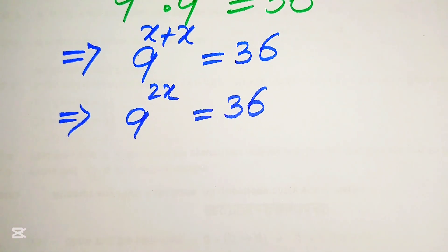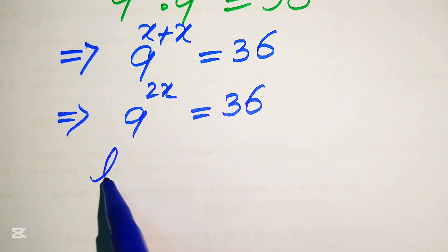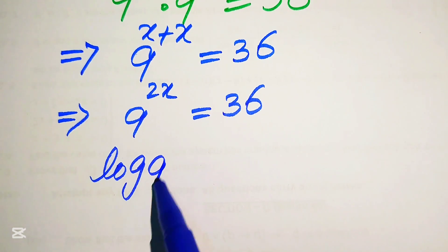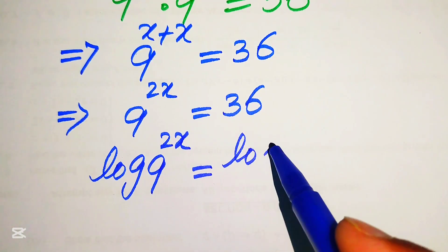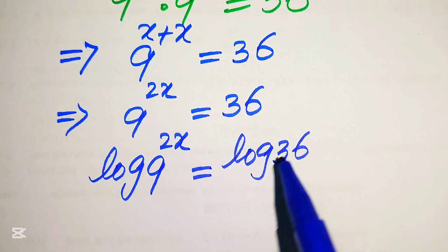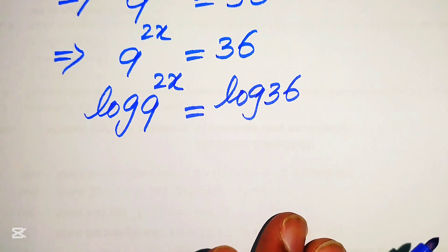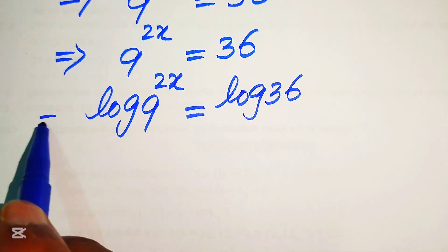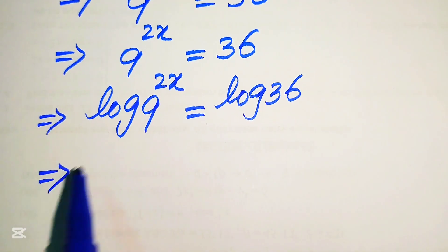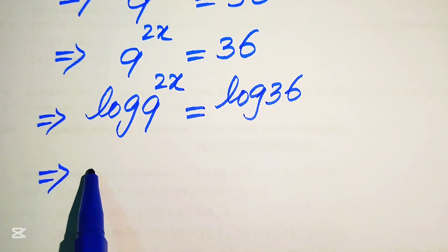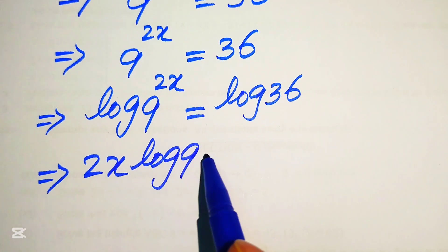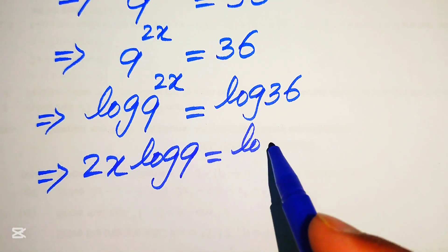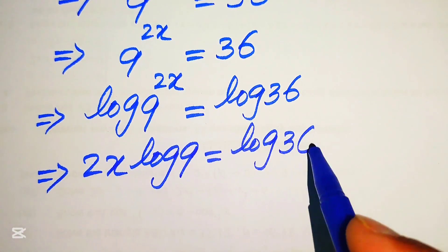We need more simplification. In order to find the value of x, we take the log on both sides. It will be written as log of 9 to the power of 2x equals log of 36. In the next step, we move the exponent 2x to the front of the log, and it will be written as 2x times log 9 equals log of 36.